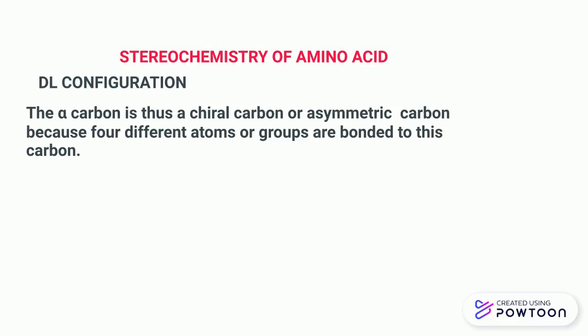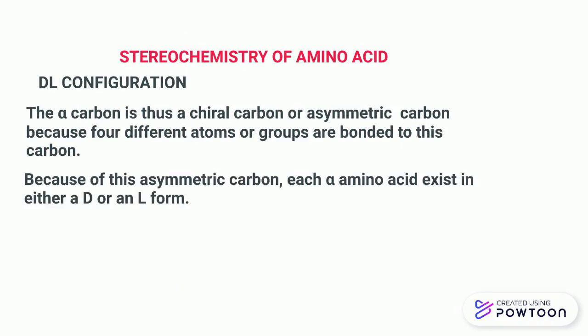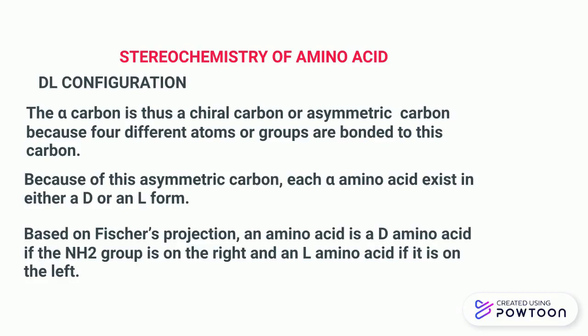Now we will discuss about the stereochemistry of amino acids. First, the DL configuration. The alpha carbon is a chiral or asymmetric carbon atom because four different atoms or groups are bonded to it. Because of this asymmetric carbon, each alpha amino acid exists either in D or L form.